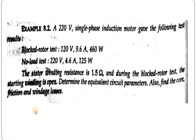Let us concentrate on this problem. A 220V single-phase induction motor has the following test results. In the block rotor test, we are getting 120V, 9.6A, and 460W. That means the motor rated current is 9.6A and the rated voltage of this induction motor is 220V. This 460W basically equals the copper loss of the single-phase induction motor, and 125W is the iron loss of the single-phase induction motor.